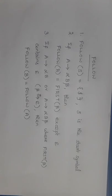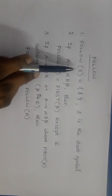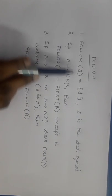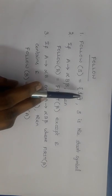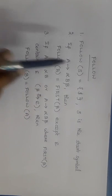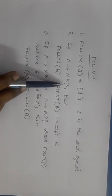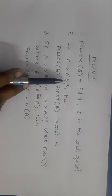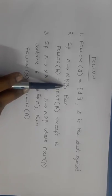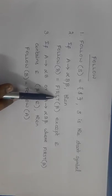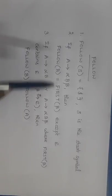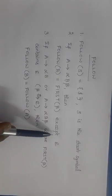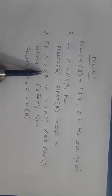Now the FOLLOW function — there are also three rules. Rule 1: FOLLOW of S equals {$}, where S is the start symbol of the grammar. Rule 2: if A → alpha B beta is a production, and we want FOLLOW of non-terminal B, then we consider beta. If B is followed by string beta, FOLLOW of B includes all symbols of FIRST of beta except epsilon.